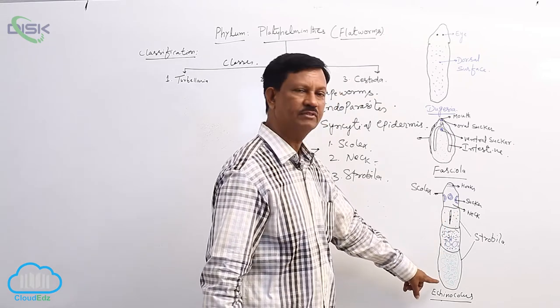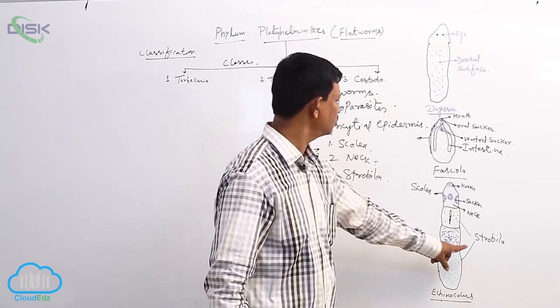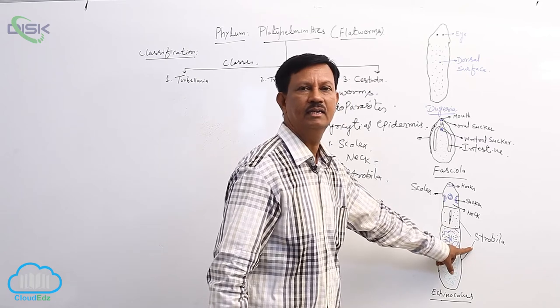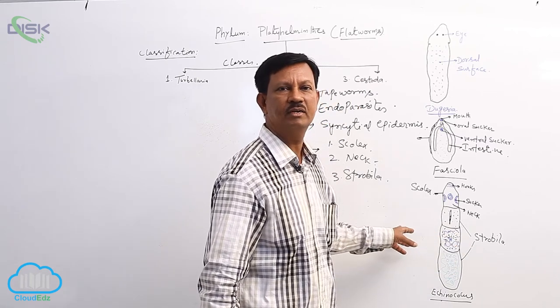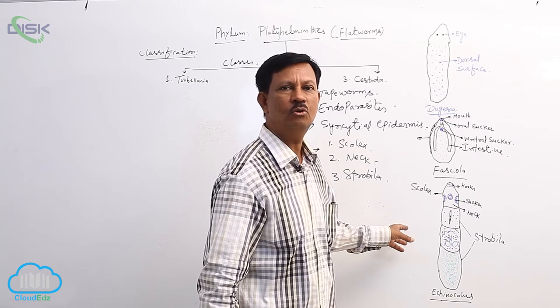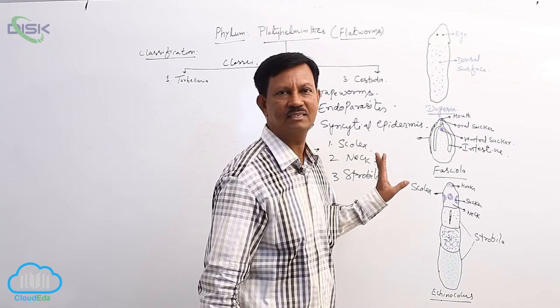Behind the neck, a large number of segments are present, which are known as the strobila or segments. The body is divided into segments, but they are not true segments—they show pseudometamerism.